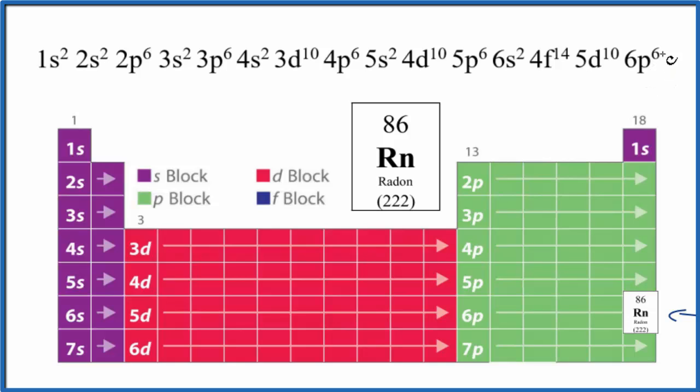If we look at the configuration, the last term should be that 6p6. So we went down to the sixth period, the sixth row, we go over, we find radon 6p 1 2 3 4 5 6, so that's helpful to note.